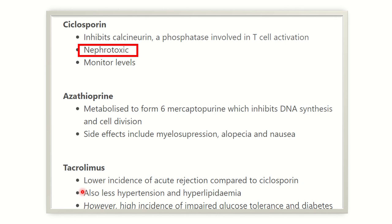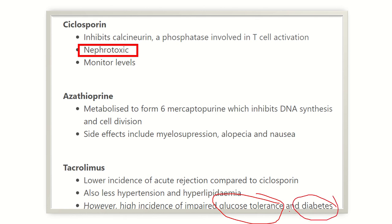Tacrolimus has a high incidence of impaired glucose tolerance and diabetes. So if tacrolimus is used in a renal transplanted patient, there is a great chance of developing glucose intolerance and diabetes mellitus.